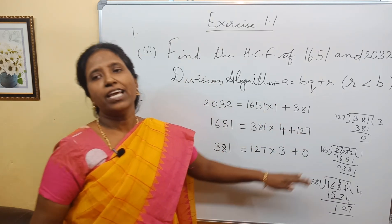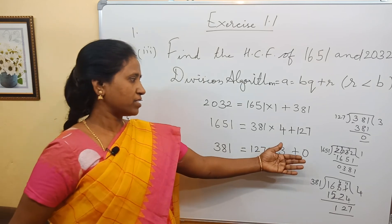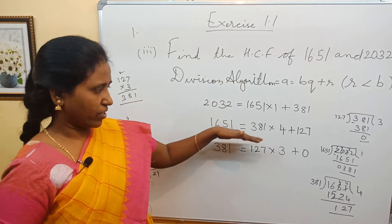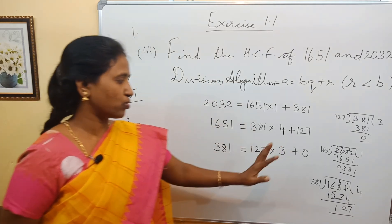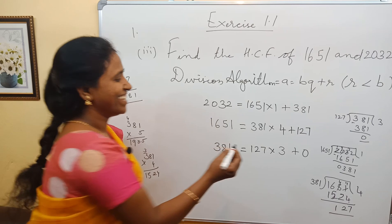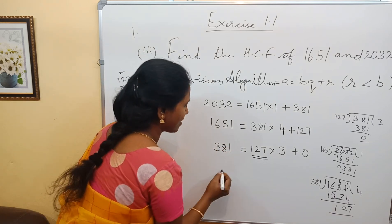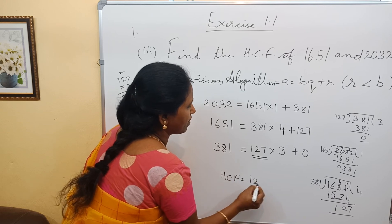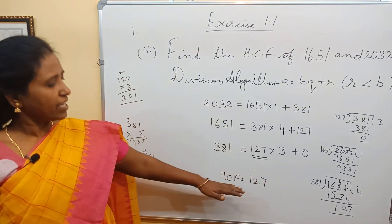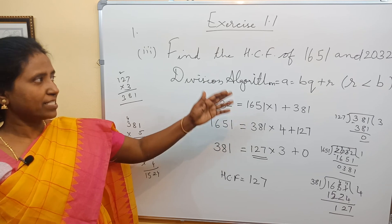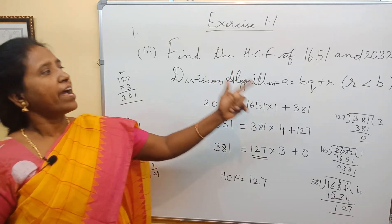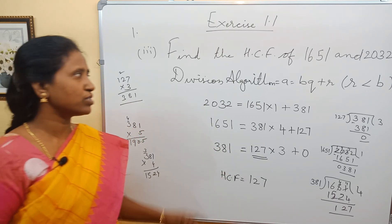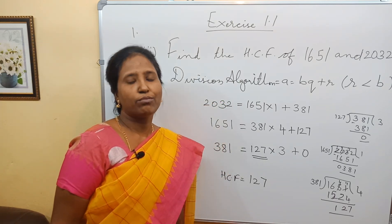As 0 comes, here we end, because we cannot replace B. This is the end of this calculation. Whenever you get 0, you stop it. What is the HCF here? The HCF is 127. So 127 is the number which exactly divides 1651 and 2032. This is how we find the HCF of two numbers using Euclid's division algorithm.